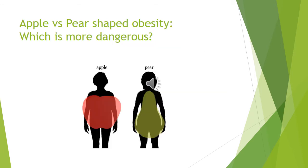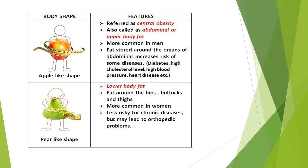Apple versus pear obesity — which is more dangerous? The apple type is also known as android obesity, and pear-shaped obesity is gynecoid obesity. The apple-like shape is central obesity, also called abdominal fat. It is more common in men and the fat is stored around the organs. Abdominal obesity increases the risk of diabetes, high cholesterol, high blood pressure, and heart disease. The pear-like shape has fat around the hips, buttocks, and thighs, is more common in women, and is less risky for chronic diseases, mainly causing orthopedic problems.